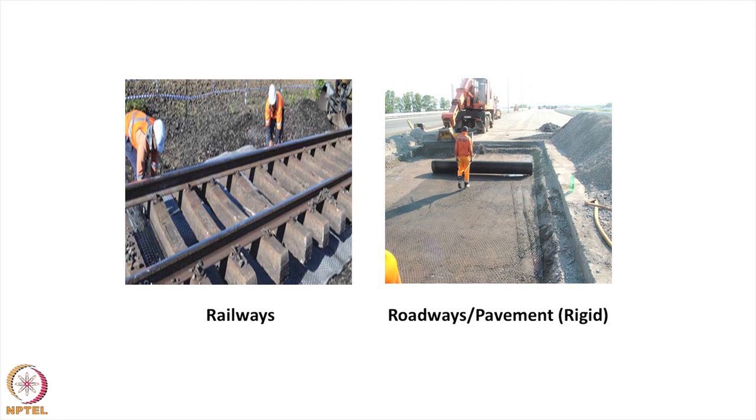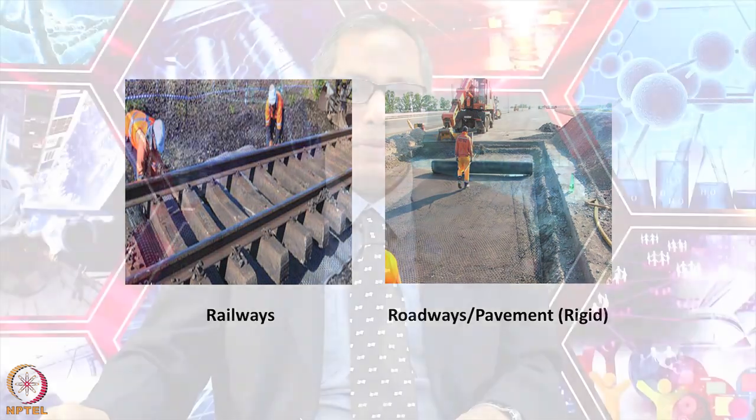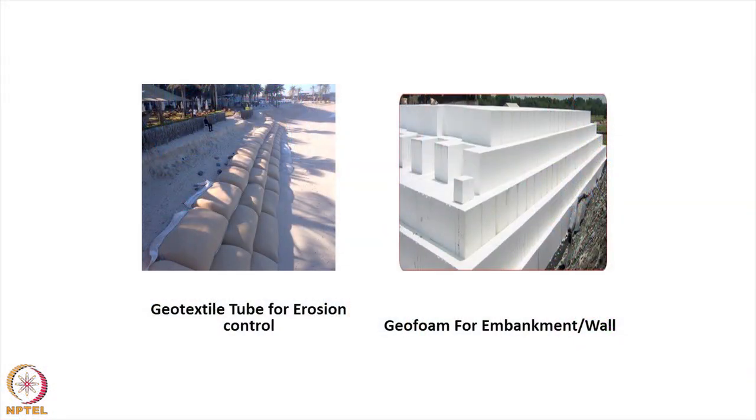Therefore, you should know how to perform geosynthetics testing, what kind of tests are required, and what kind of specifications or properties of the geosynthetic material are required to design the road or reinforced soil wall or slope. You can also create green structures which are environmentally friendly. Geosynthetics can be used for repairing, rehabilitation, or new construction of railway — geosynthetics material is used beneath the railway. You can also use geosynthetics in rigid pavement structures. A geotextile tube can be used near the seashore for erosion control.